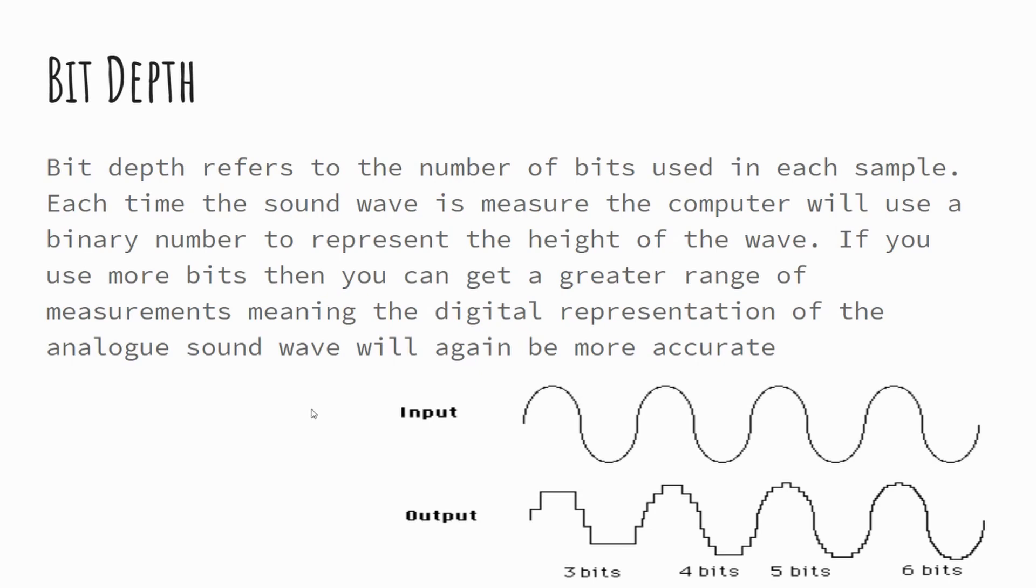Bit depth then. So bit depth is just like in images where we're talking about how many bits we're using per measurement. So in that respect, when we look at the analog sound wave, we've got our input sound wave, same curve, and then our output. The amount of bits that we use gives us the different heights that we can measure and the different variations within those heights.